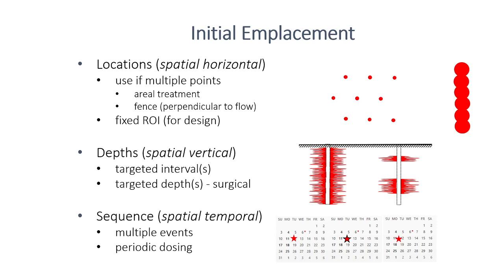Depth-specific emplacement has to do with targeting vertical intervals, or where you have strata that's vertically inhomogeneous and you're trying to inject in select strata — targeting your depth injection relative to your concentrations. Finally, you have sequence or spatial-temporal emplacement, where you're doing multiple events and periodic dosing for a number of purposes. Maybe you don't have access except once a month, maybe there's too much volume to apply — you're doing it temporally different over time.